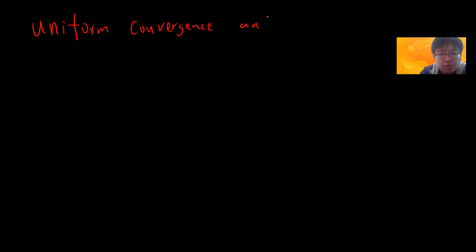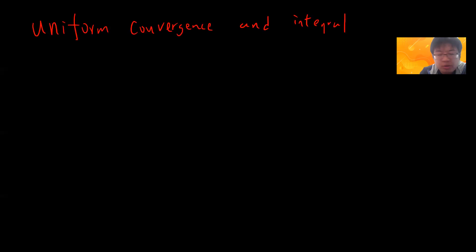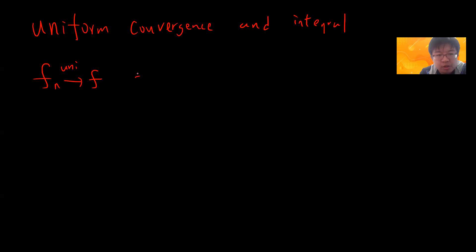Let's prove the so-called uniform convergence for the integral. Remember what we previously proved: when fn converges to f uniformly, uniform convergence implies pointwise convergence. So if fn converges to f uniformly, then one can exchange the limit.